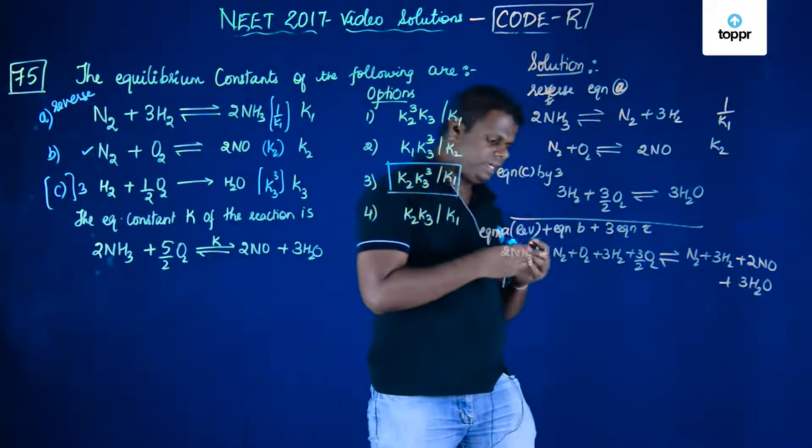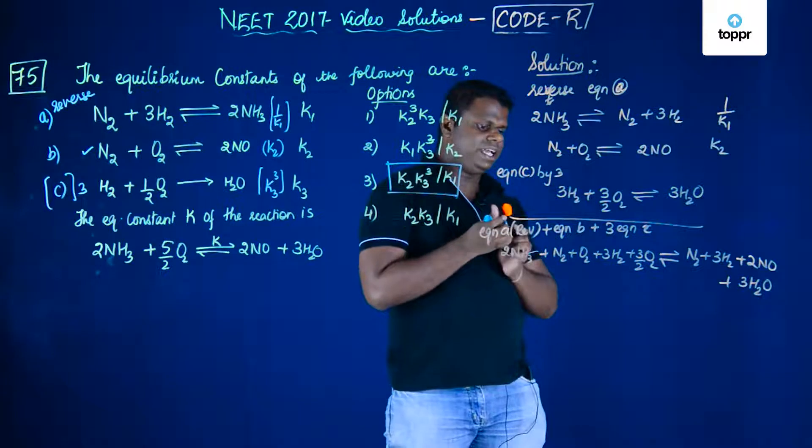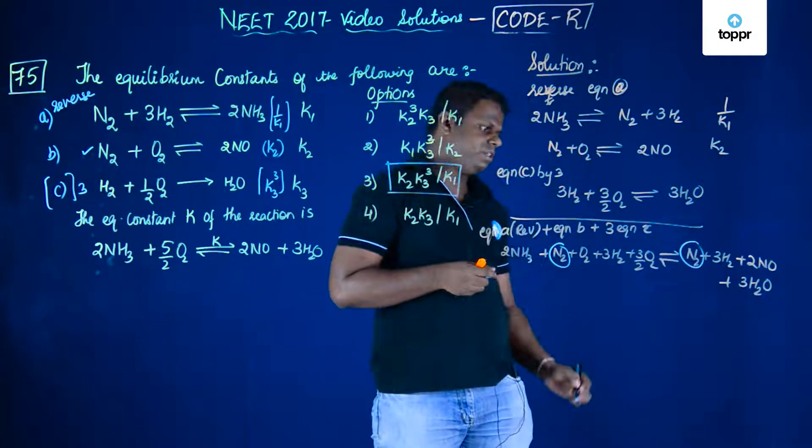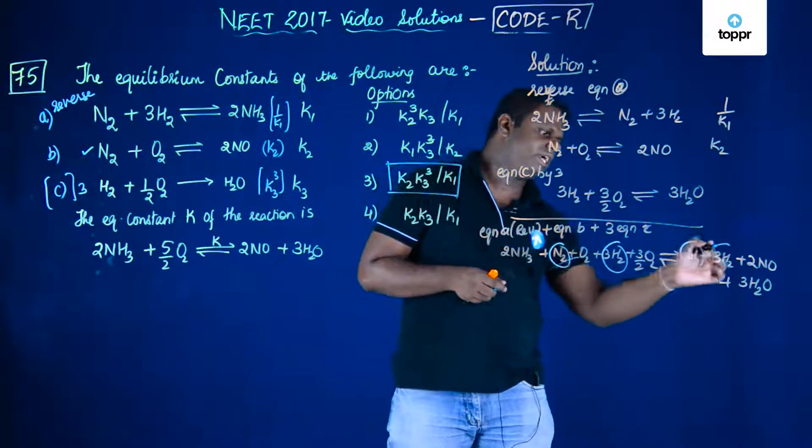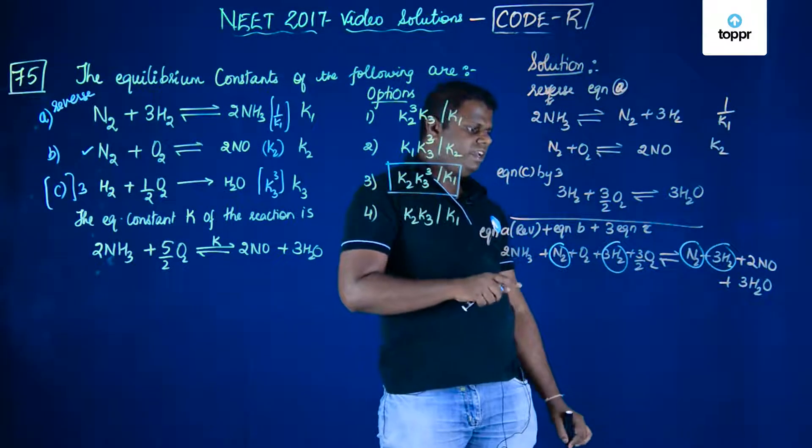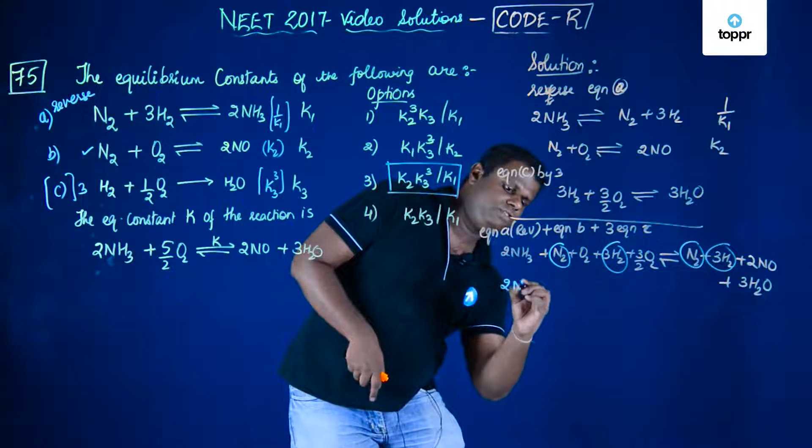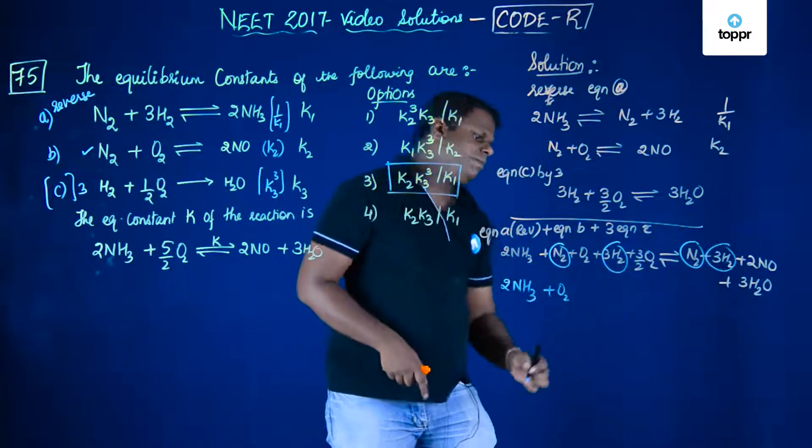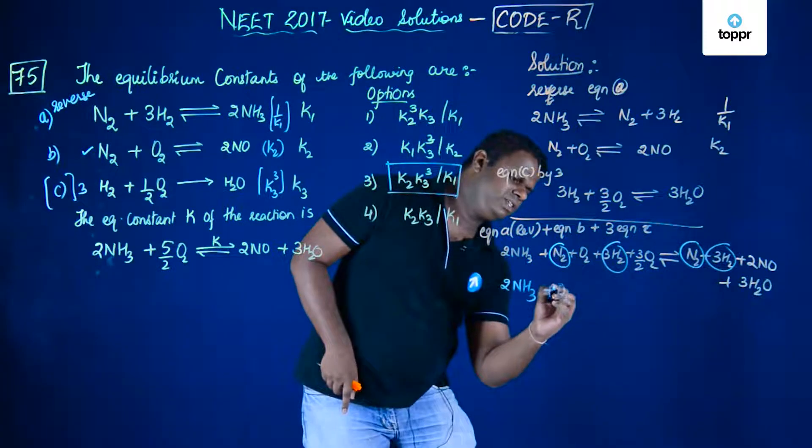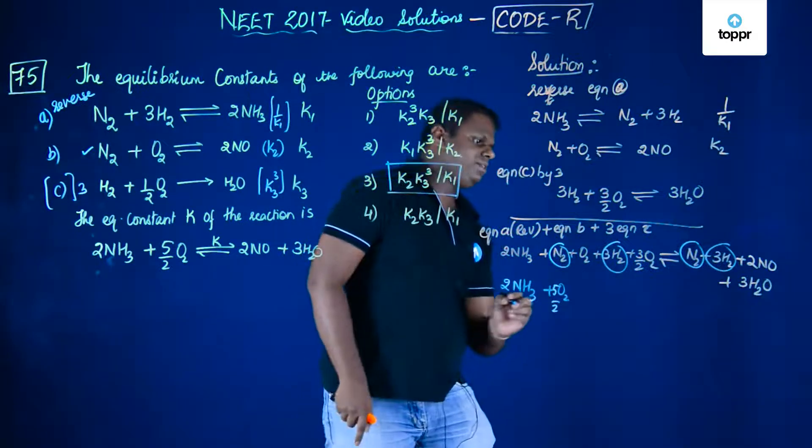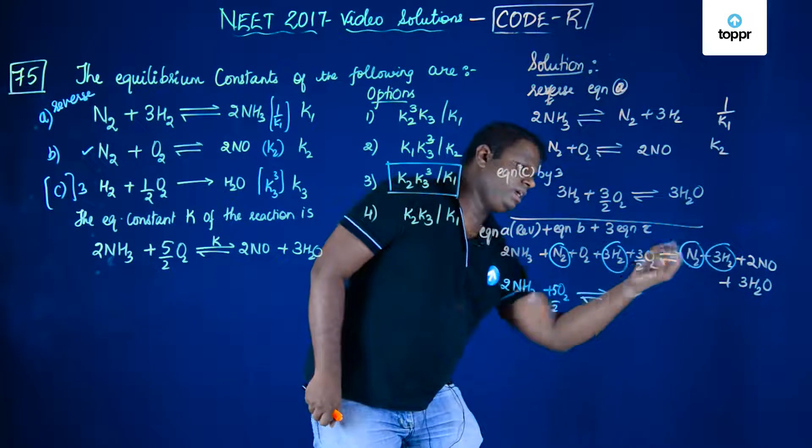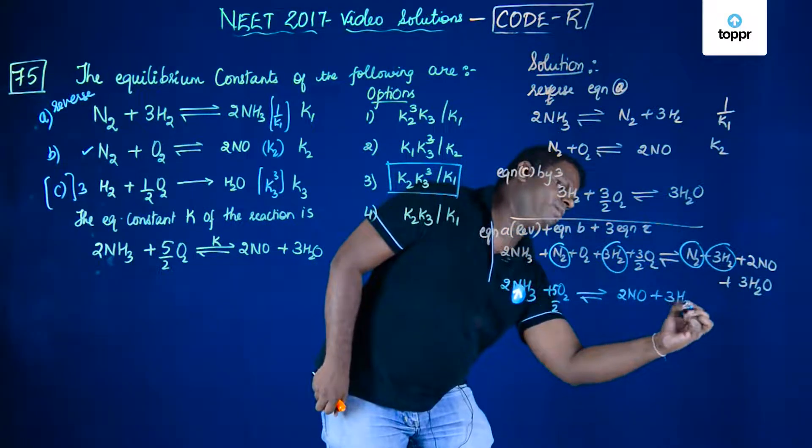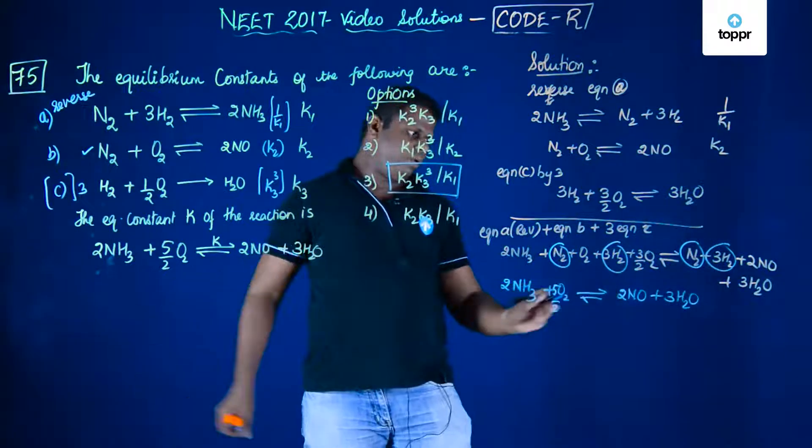Let's cancel out the common terms. The terms which are going to get cancelled are N2 and N2, so you don't need to bother about this. 3H2 and 3H2 that goes off. Finally you are left with 2 moles of NH3 plus O2 plus 3/2 O2. 1 plus 3/2 makes it 5/2 O2, giving me 2NO plus 3H2O. Let's compare with the required equation. Yes, this is the correct way.